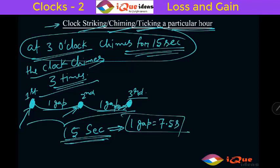Actually this is where people make mistake, they divide it by 3. No, you have to divide the total duration by the number of gaps.